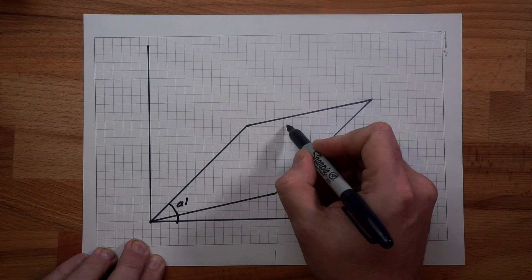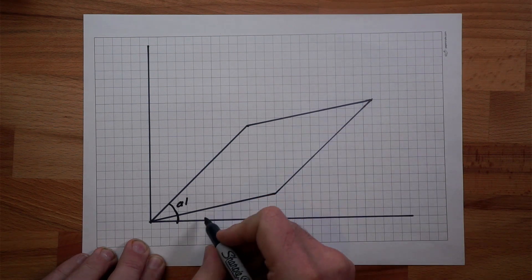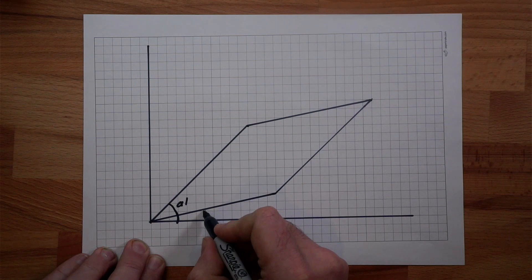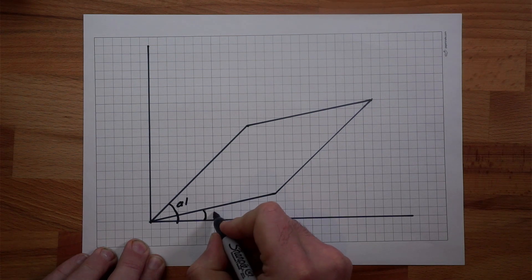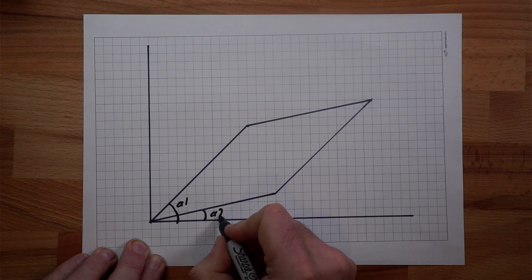It's difficult to see up here exactly what it relates to so we're going to move down to the bottom here. We know that this angle is exactly the same as what we were just looking at so we'll label that A2.